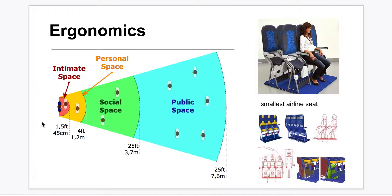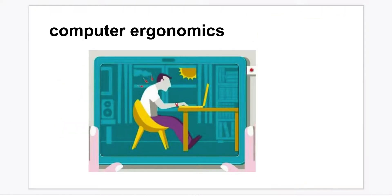So here's another example, that idea of intimate space versus public space. And I just thought this was kind of funny, the smallest airline seats look super uncomfortable, but thinking about the ergonomics and how people relate with actual products.